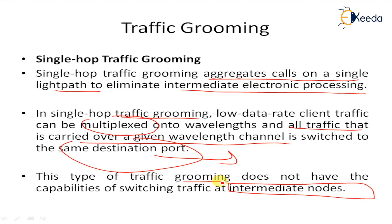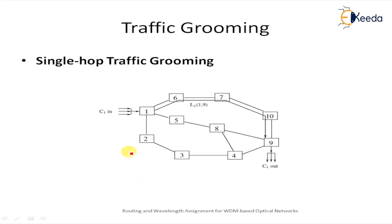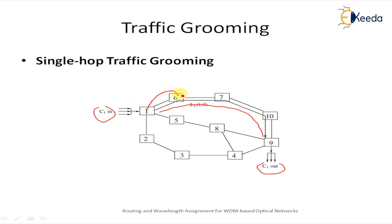Single-hop traffic grooming can only groom traffic from the same source node to the same destination node. As an example, connection C1 is carried by light path L1, which is provided from node 1 to node 9, traversing nodes 1 → 6 → 7 → 10 → 9, using a single-hop traffic grooming scheme.